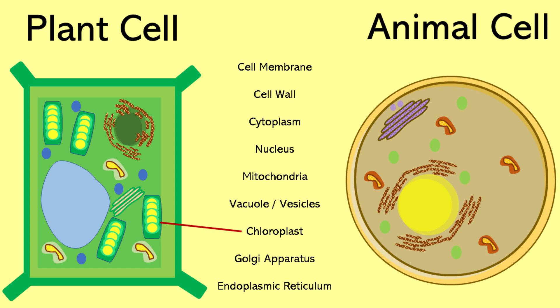Plant cells differ from animal cells in that they contain chloroplasts. It is the site within the plant where photosynthesis takes place, which is a process that converts sunlight, carbon dioxide, and water into sugars and oxygen. Chloroplasts contain a green pigment called chlorophyll, which captures light energy. This energy is then used to produce food for the plant, making chloroplasts essential for the plant's growth and energy supply.